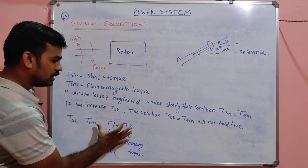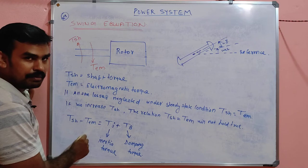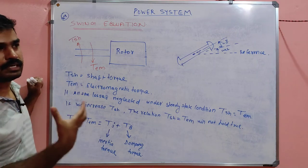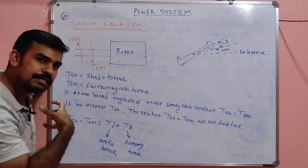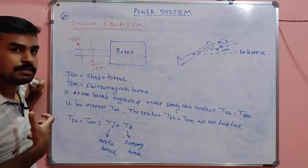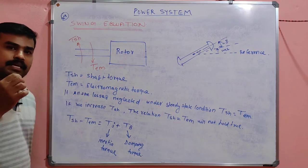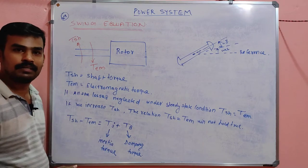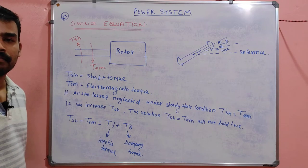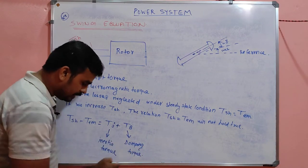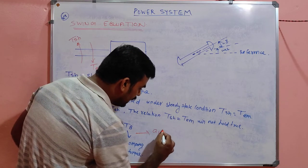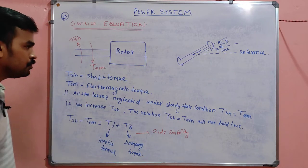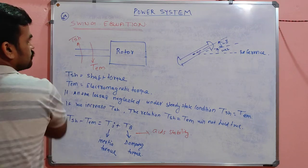So the sum of Tj and Tb equals TSH minus Tem. For stability purposes, the damping torque is most useful, because the system will become stable more quickly if the damping torque acts faster than the inertia torque. So this damping torque aids stability.